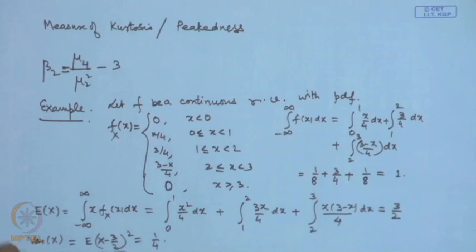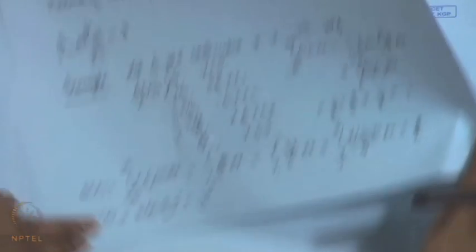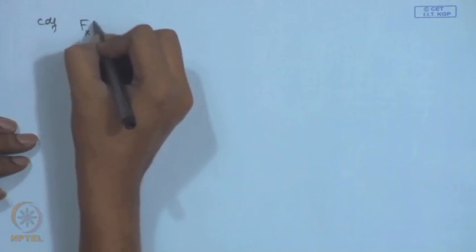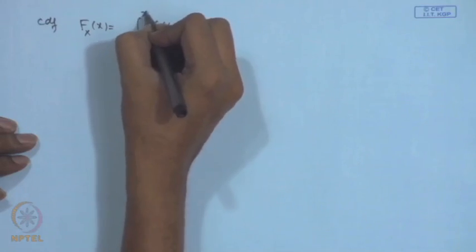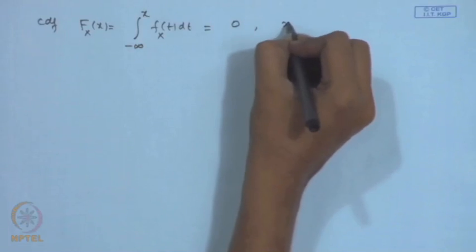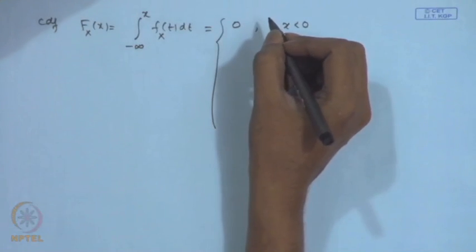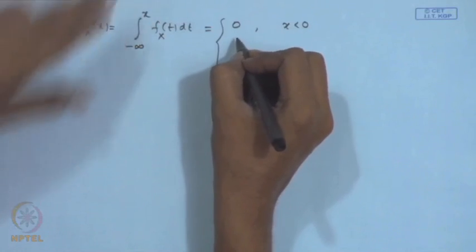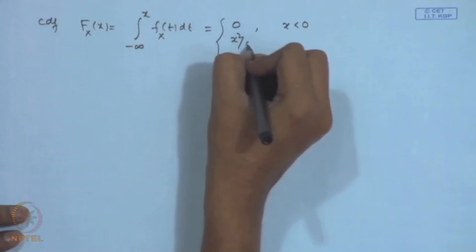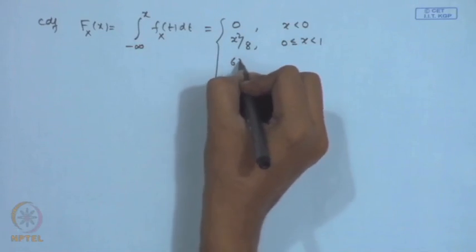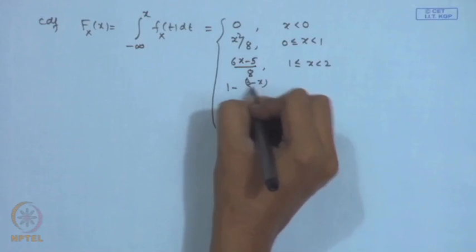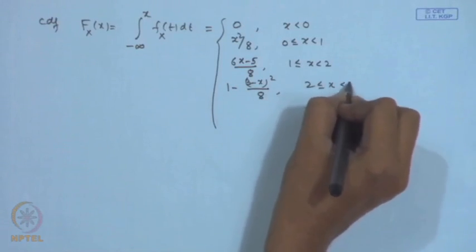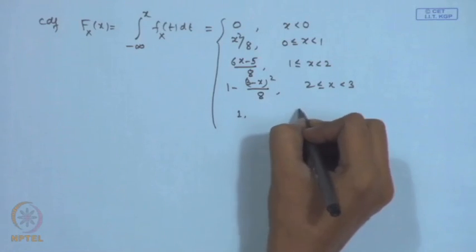Variance = E((X − 3/2)²) = ∫ (x − 3/2)² f(x) dx, integrating only over [0,3] — the value turns out to be 1/4. The CDF F(x) = ∫_{−∞}^{x} f(t) dt is: 0 for x < 0; x²/8 for 0 ≤ x < 1; (6x−5)/8 for 1 ≤ x < 2; 1 − (3−x)²/8 for 2 ≤ x < 3; and 1 for x ≥ 3.